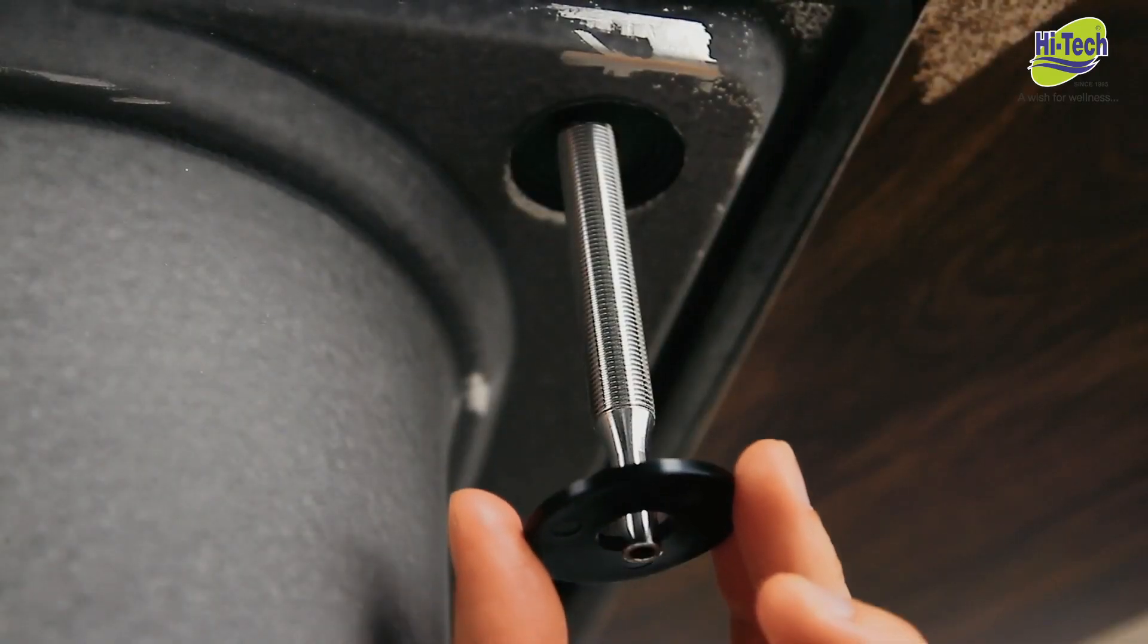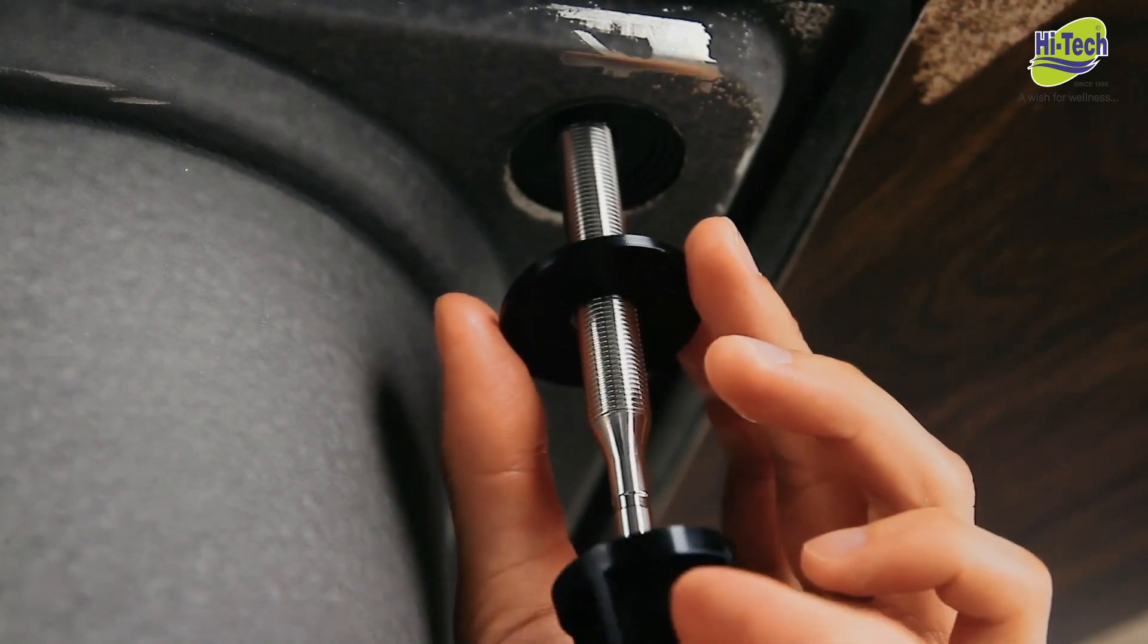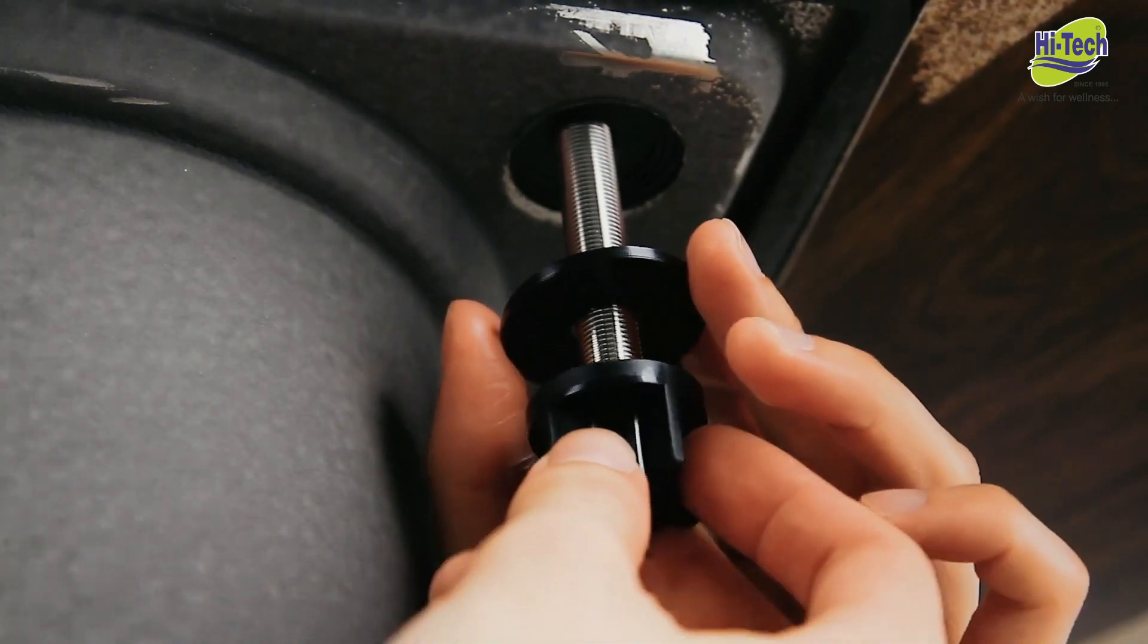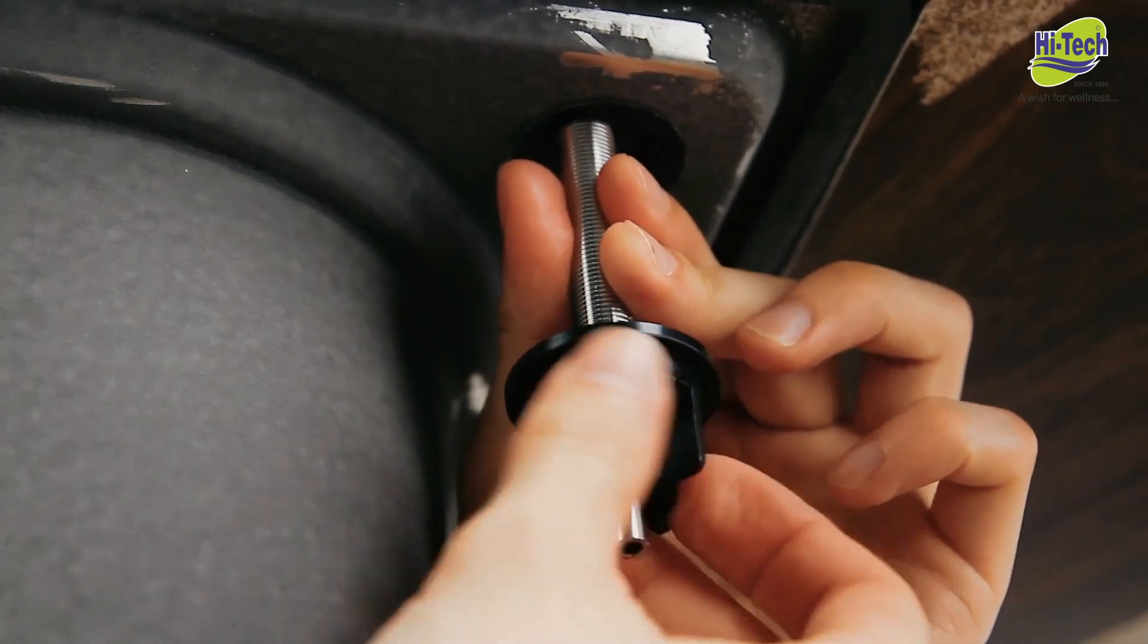Under the sink, place the bottom cap on the faucet rod. Then screw the nut to the rod to tighten up the faucet.